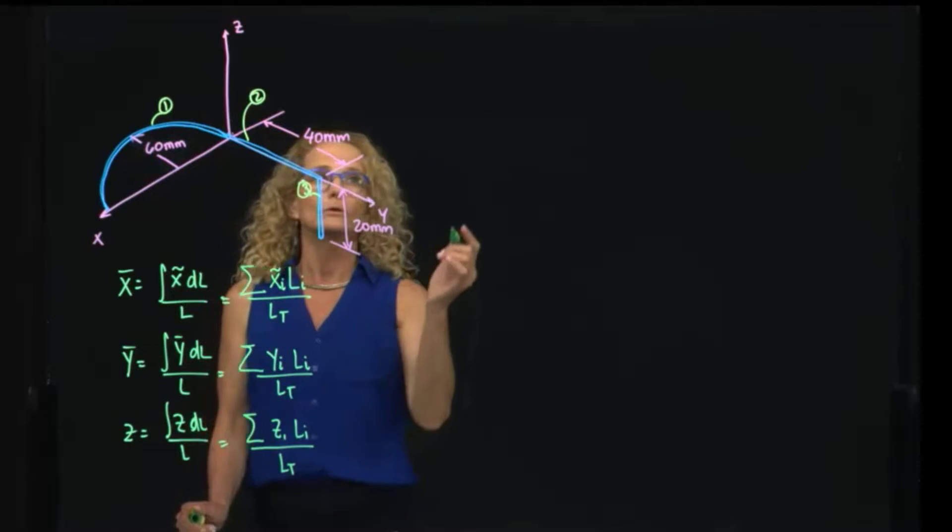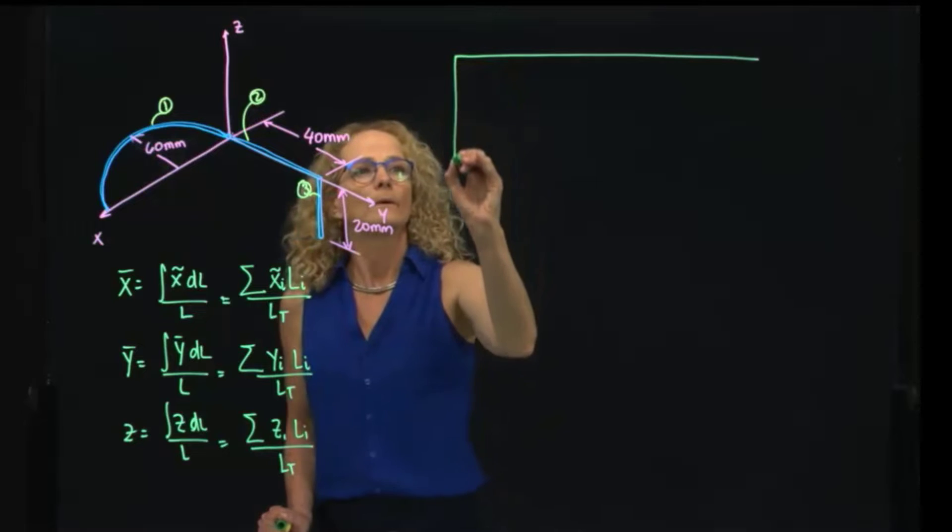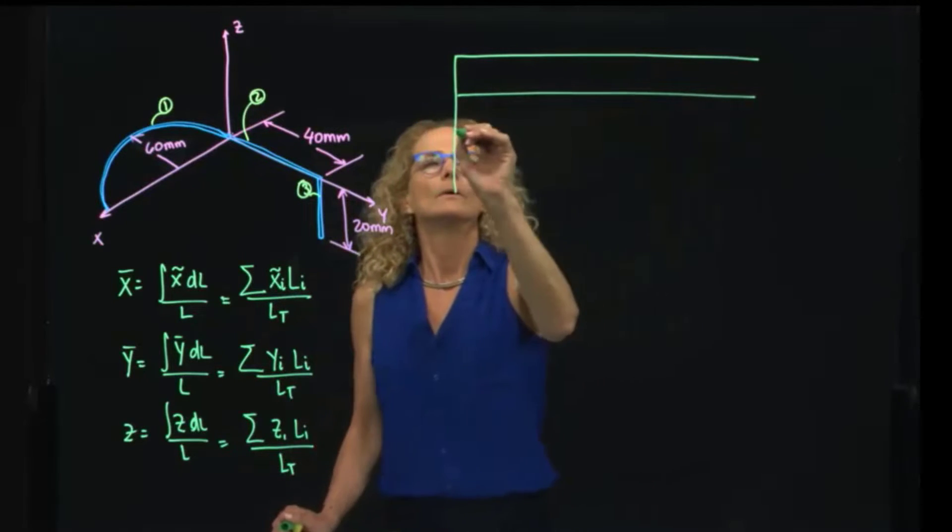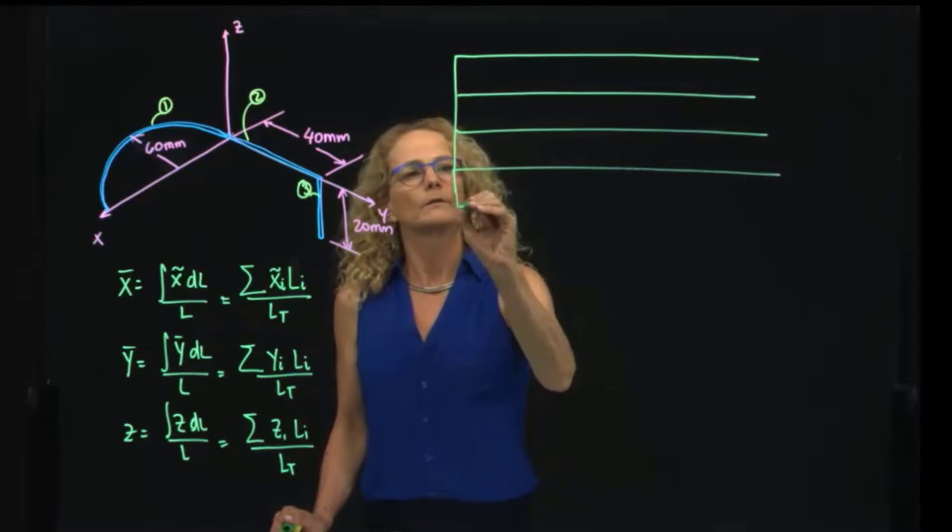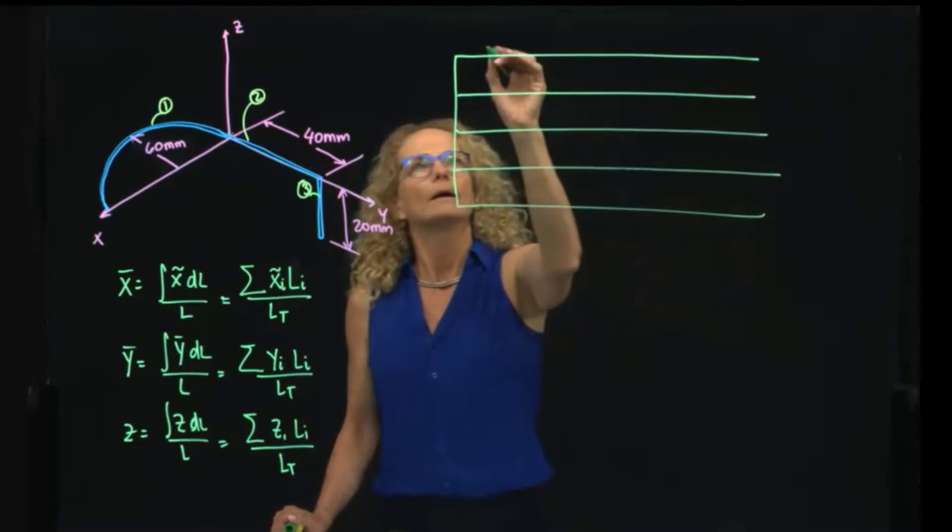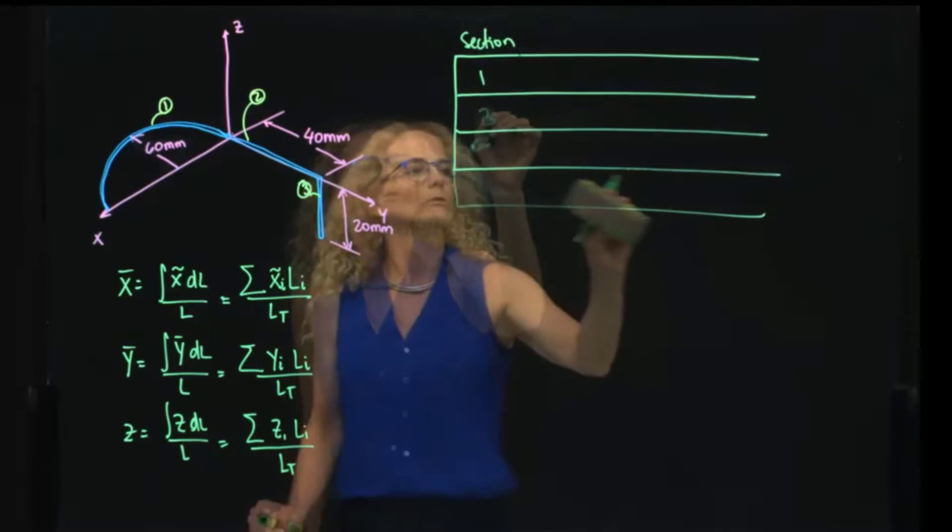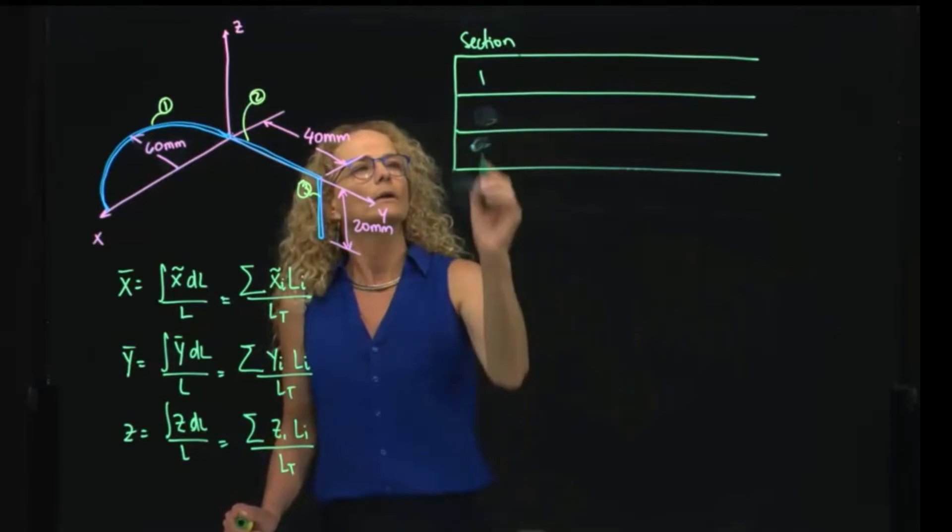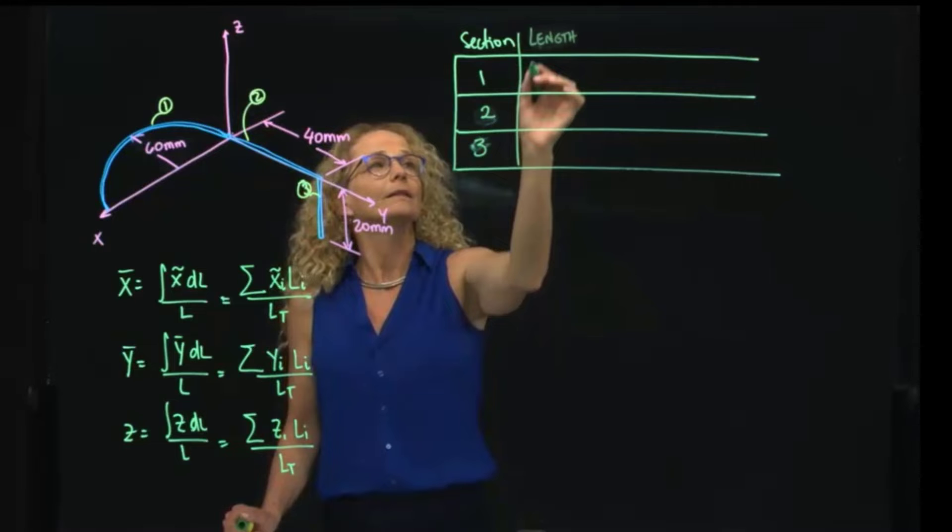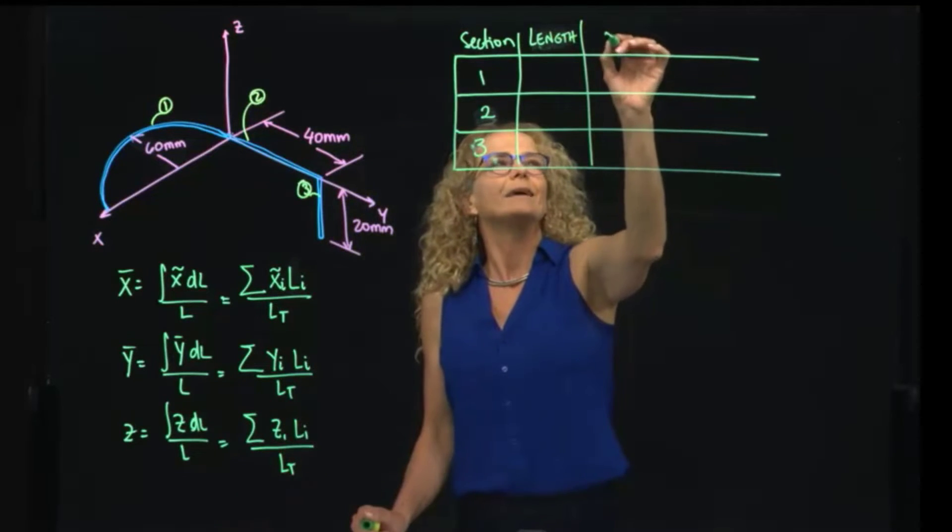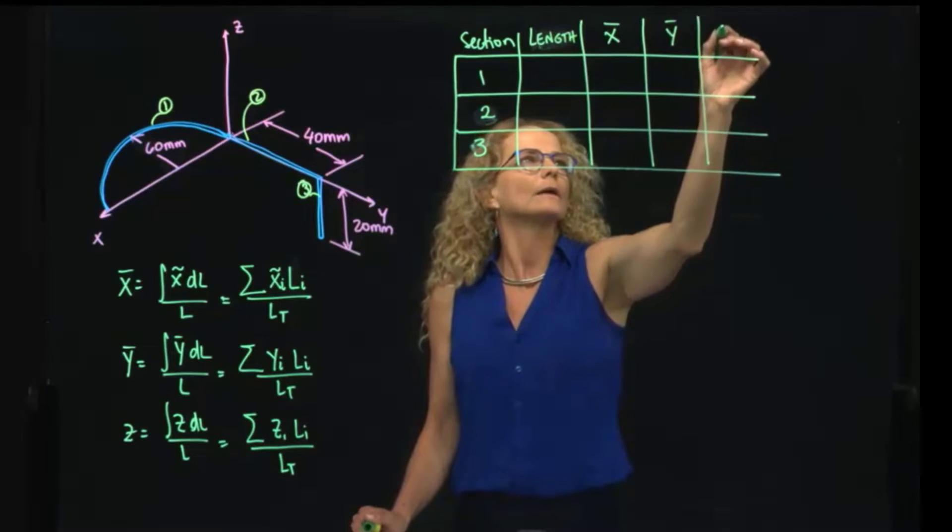To do so, we will do a little table with our three parts. And here we go, the section. This is one, so I don't need that line. One, two, and three. And then we need the length of each section. We need the position of the centroid of that section in each of the directions.